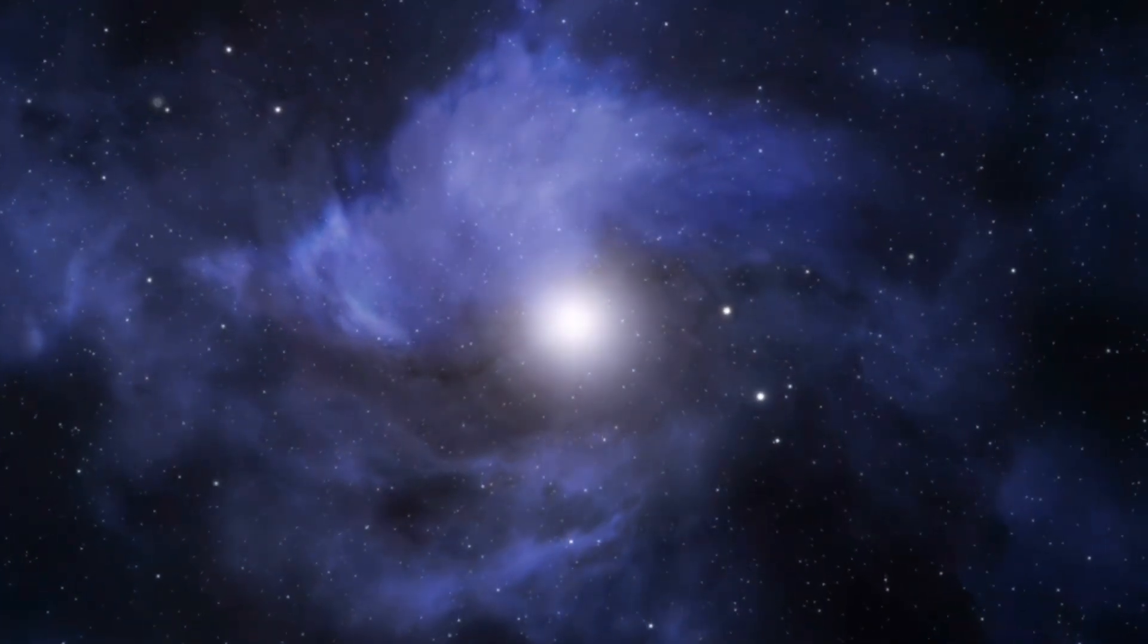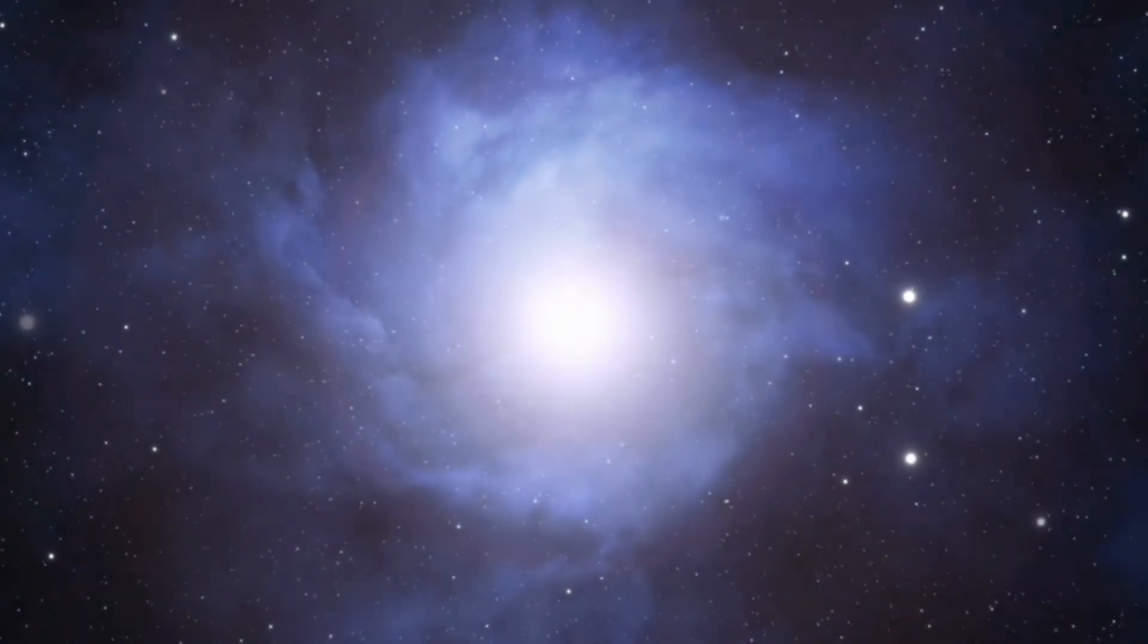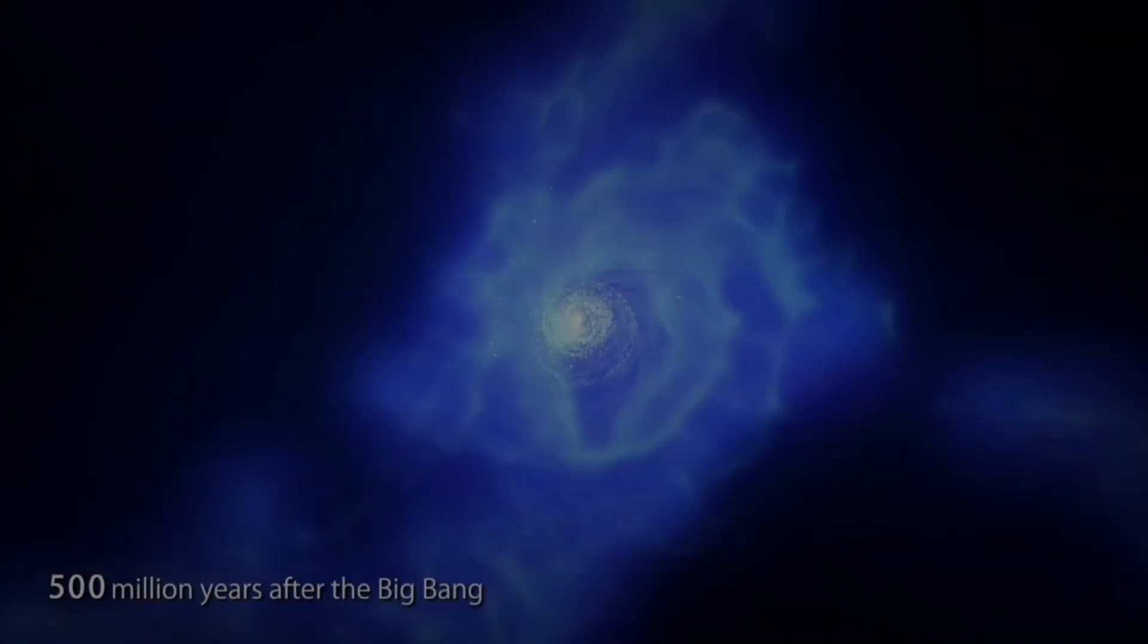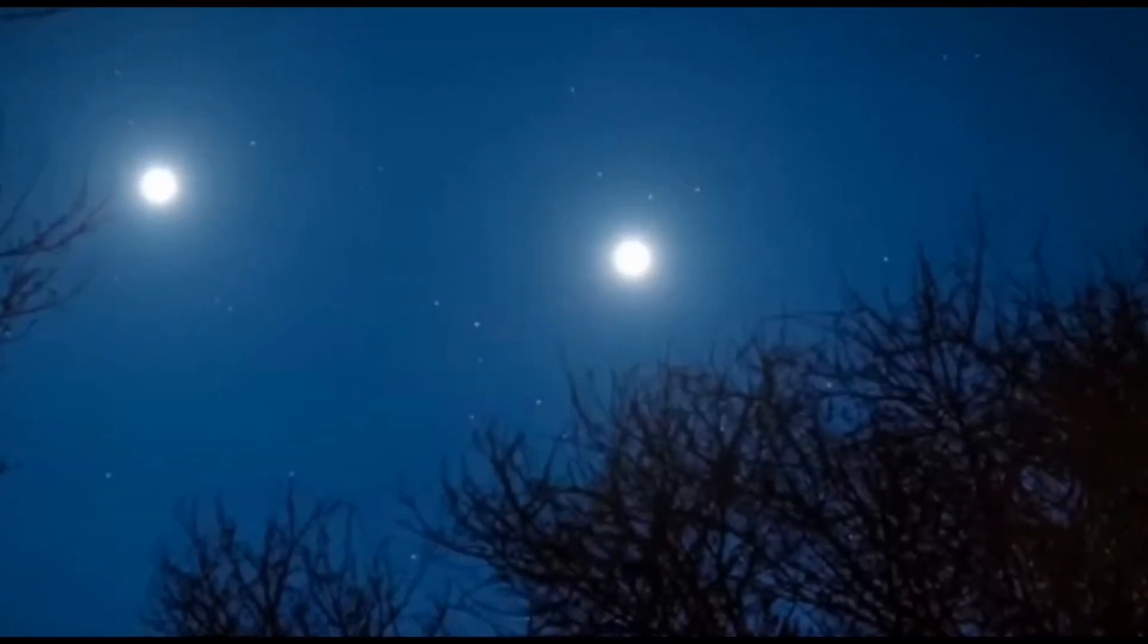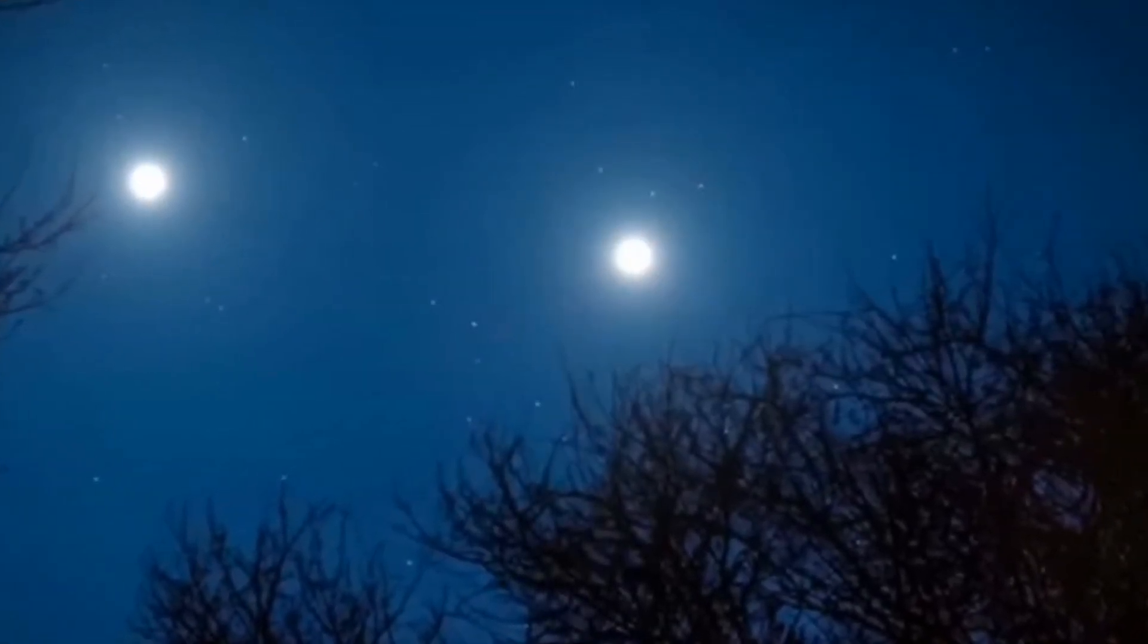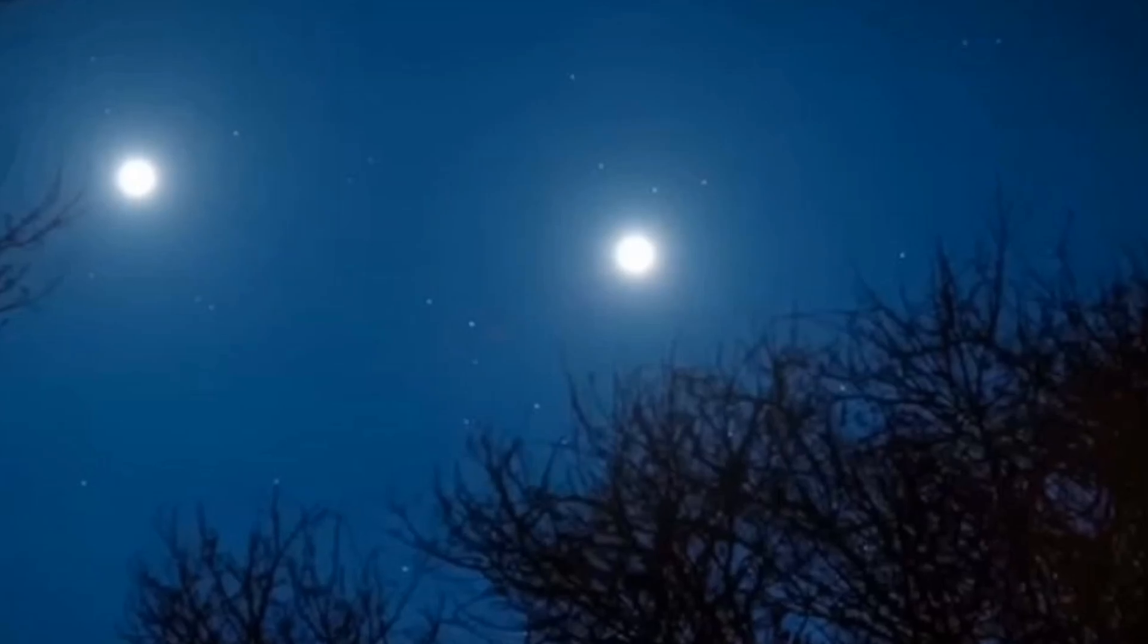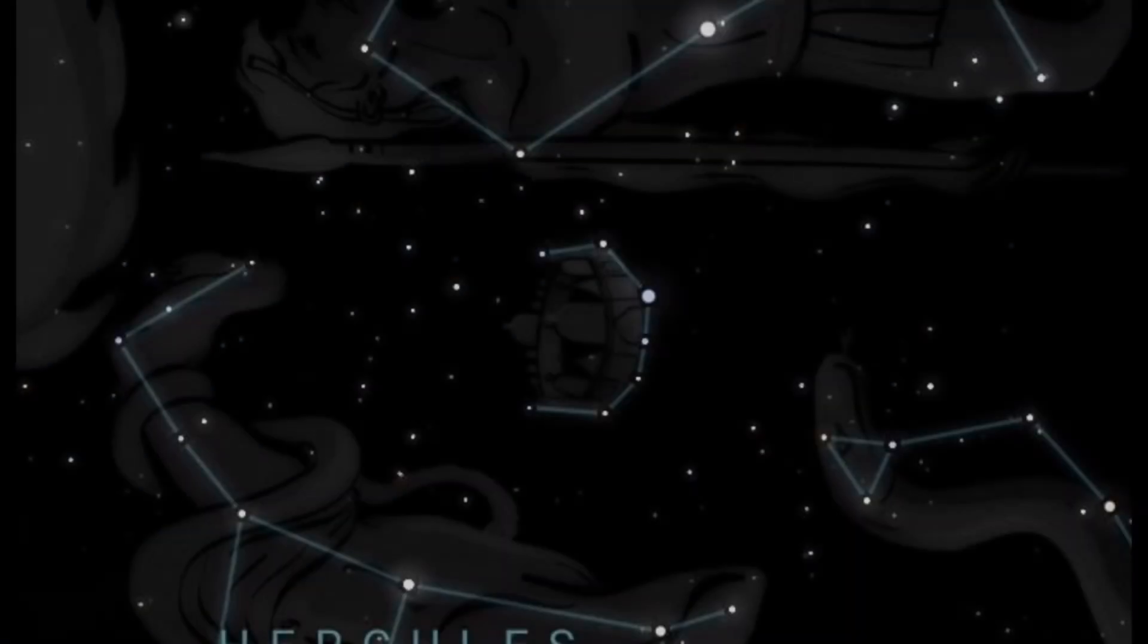But how can a star that is so dim suddenly explode with such a bright flash? This process takes years, right? The last time something like this happened in the sky, it looked as if there were not one, but two Venuses in the sky. Do you remember?